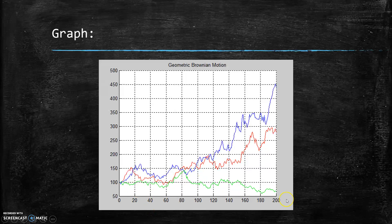If you went the green track, not such good luck. Looks like you lost a little bit. But this is our geometric Brownian motion simulation.